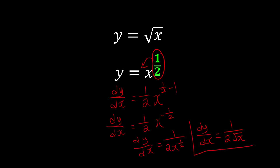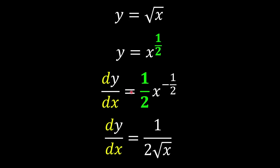This is a result worth memorizing because we use it very often — whenever you differentiate root x, the answer is 1 over 2 square root of x. To recap: when you see a radical form, convert it to index form so you can use the power rule to bring the power to the front and reduce it by 1. To beautify the result, bring the negative power back down to become the denominator, giving 2 square root of x.